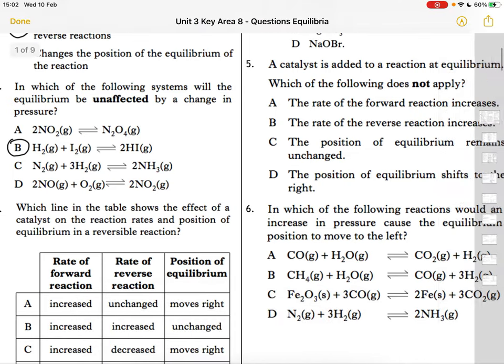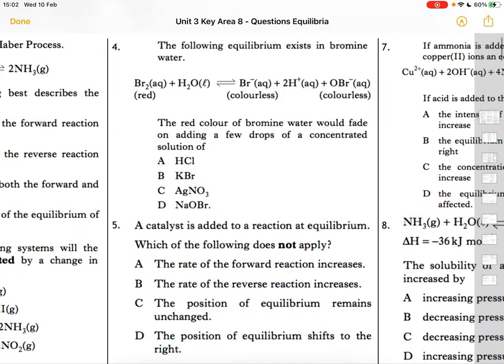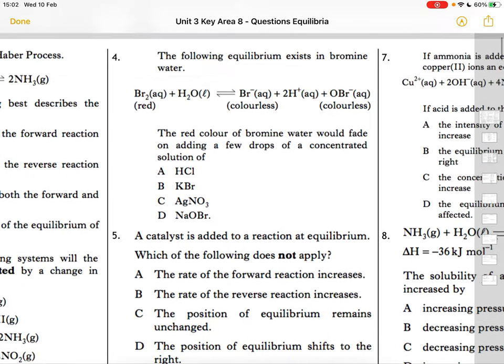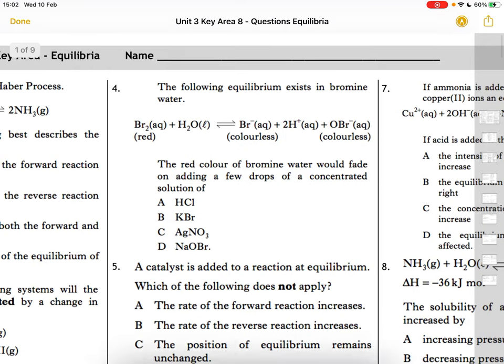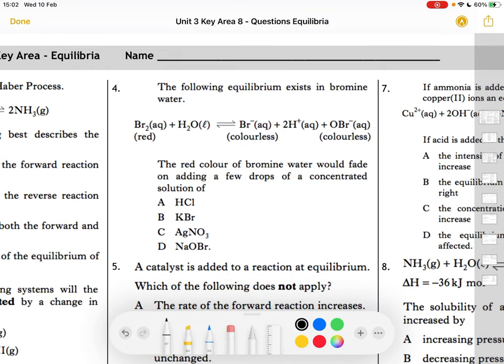Let's try another one. This looks like a good one. So it says the following equilibrium exists in bromine water and this is number four. The red color of bromine water would fade on adding a few drops of a concentrated solution of... So we need something that's going to be producing less of this bromine because that's what's giving it this red color.